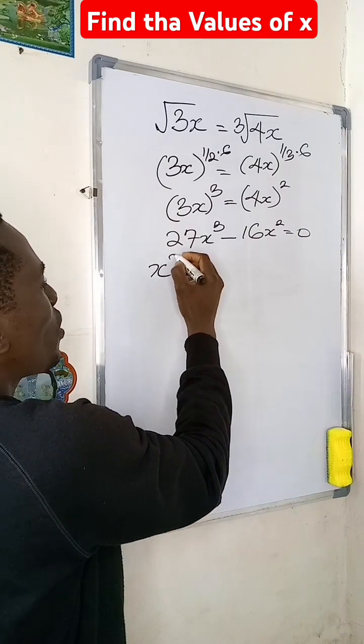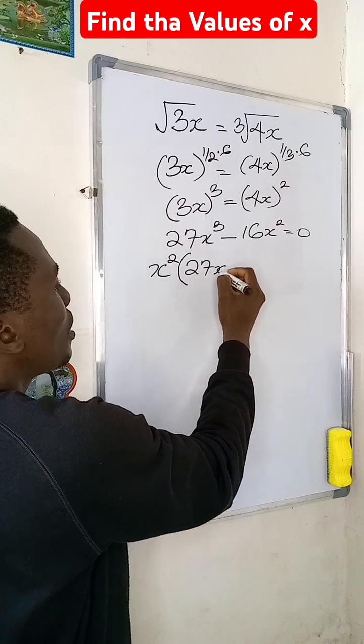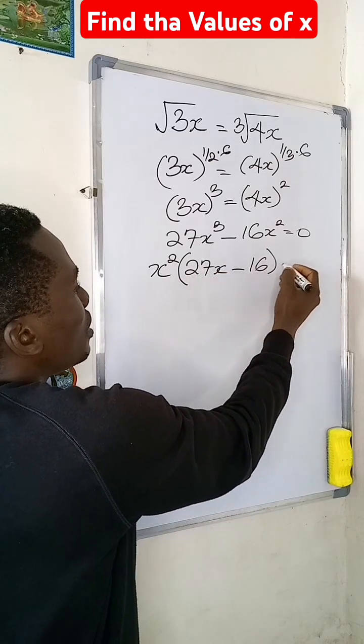So looking at this, I can see that x squared is common. So if I remove x squared, I'll have 27x minus 16, and this will be equal to 0.